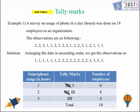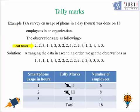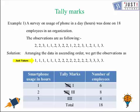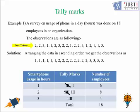Let's look at how we can work with tally with one example. A survey on the usage of phone in a day — that is number of hours — was done on 18 employees in an organization. You can see there are observations given here: one person uses their phone for 2 hours, someone for 3 hours, someone for 1 hour, and so on. When working with tally, to make our work a little simpler, we can first arrange them in order — either ascending or descending, it's your wish. So in the first column we write smartphone usage with number of hours: 1, 2, and 3, because 3 is the maximum number given here.